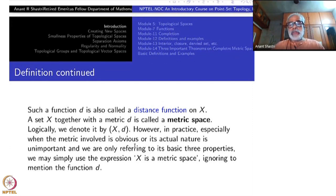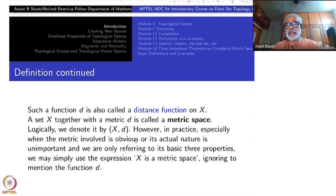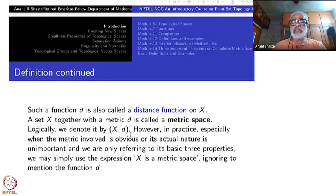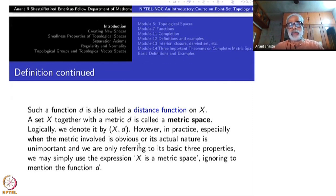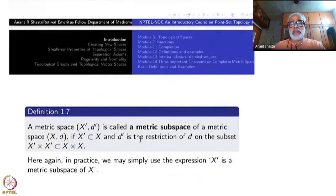Quite often we will just say X is a metric space without explicitly mentioning d, when the metric is understood from context or mentioned just moments before. Logically, every time you should say (X,d) is a metric space for it to make complete sense.